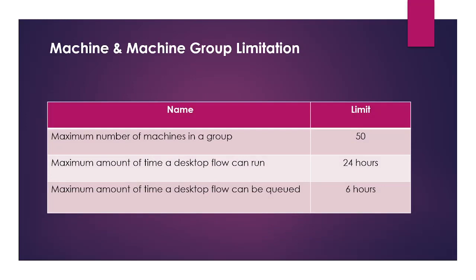Here are some limitations about machines and machine groups. The maximum number of machines in a group is 50 — so if you create a machine group, you can have a maximum of 50 machines in that group.